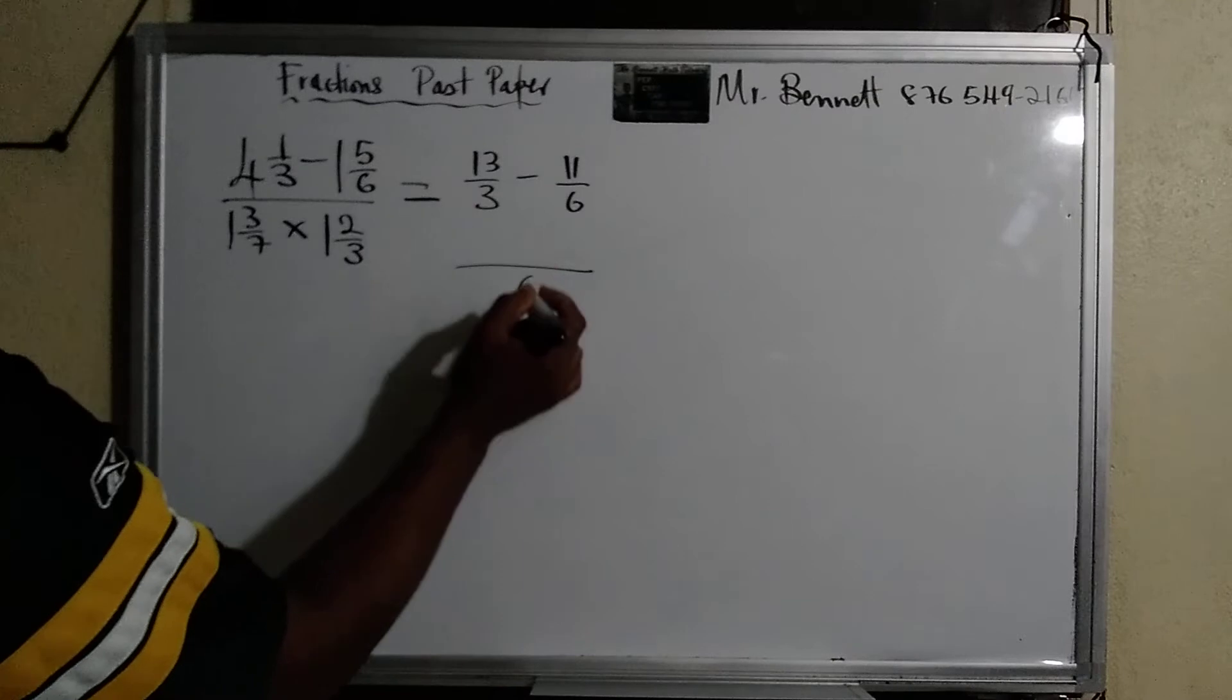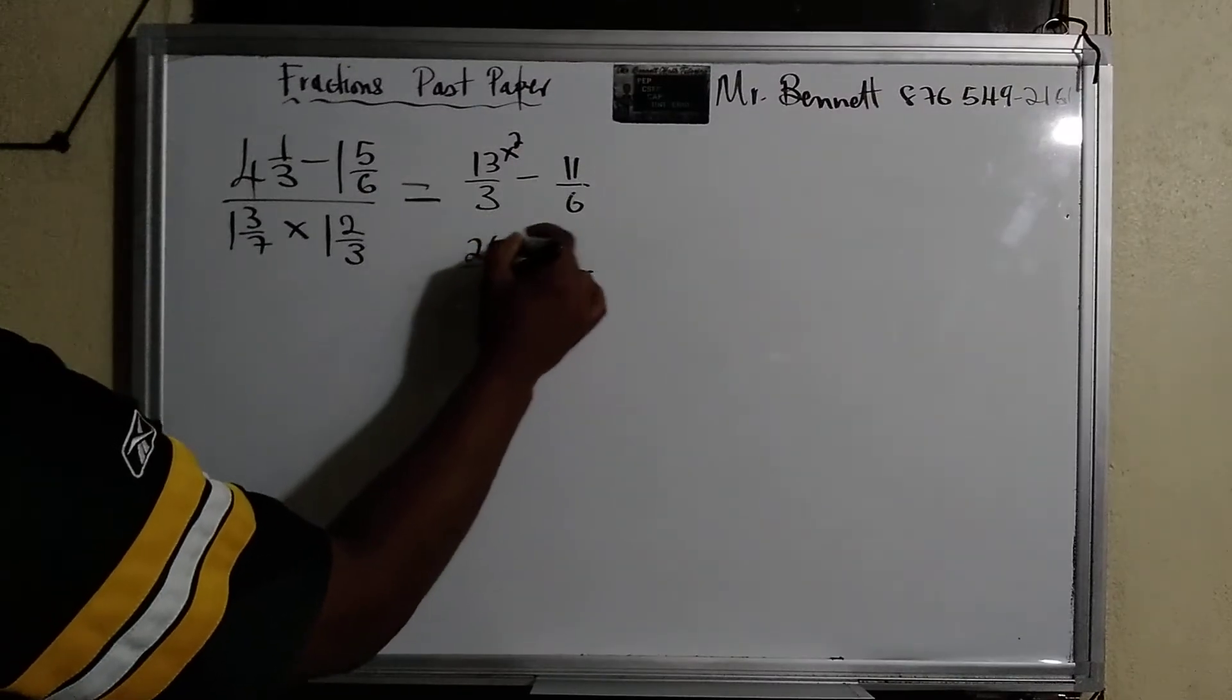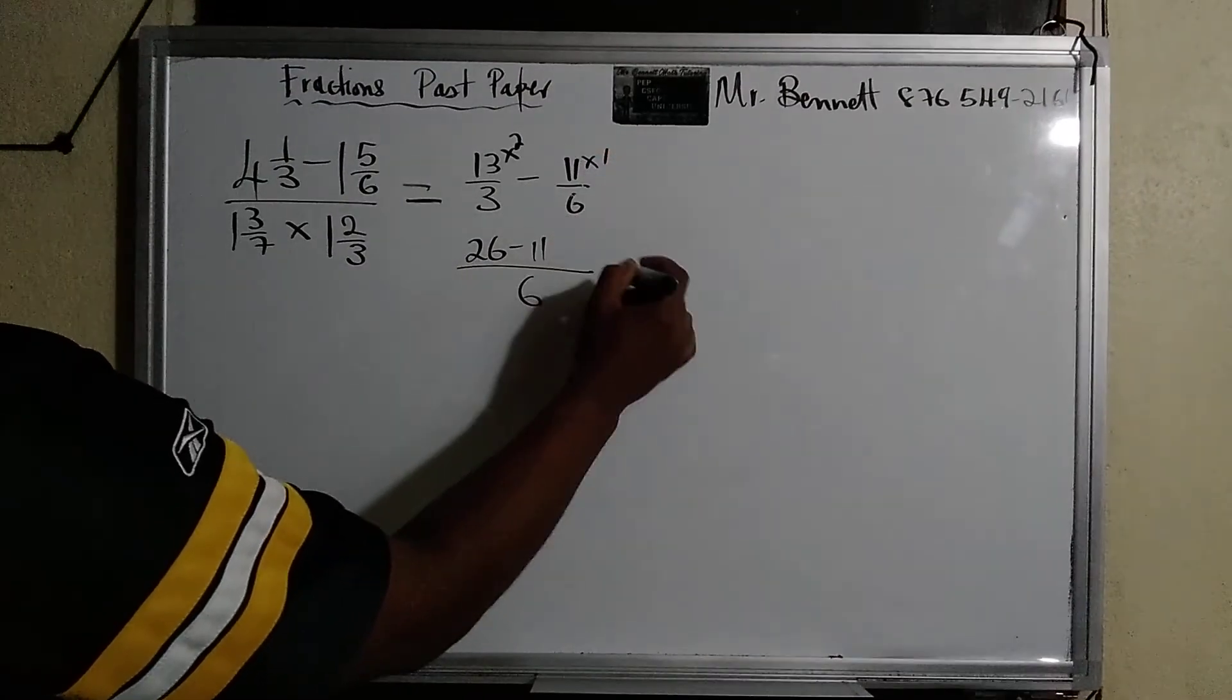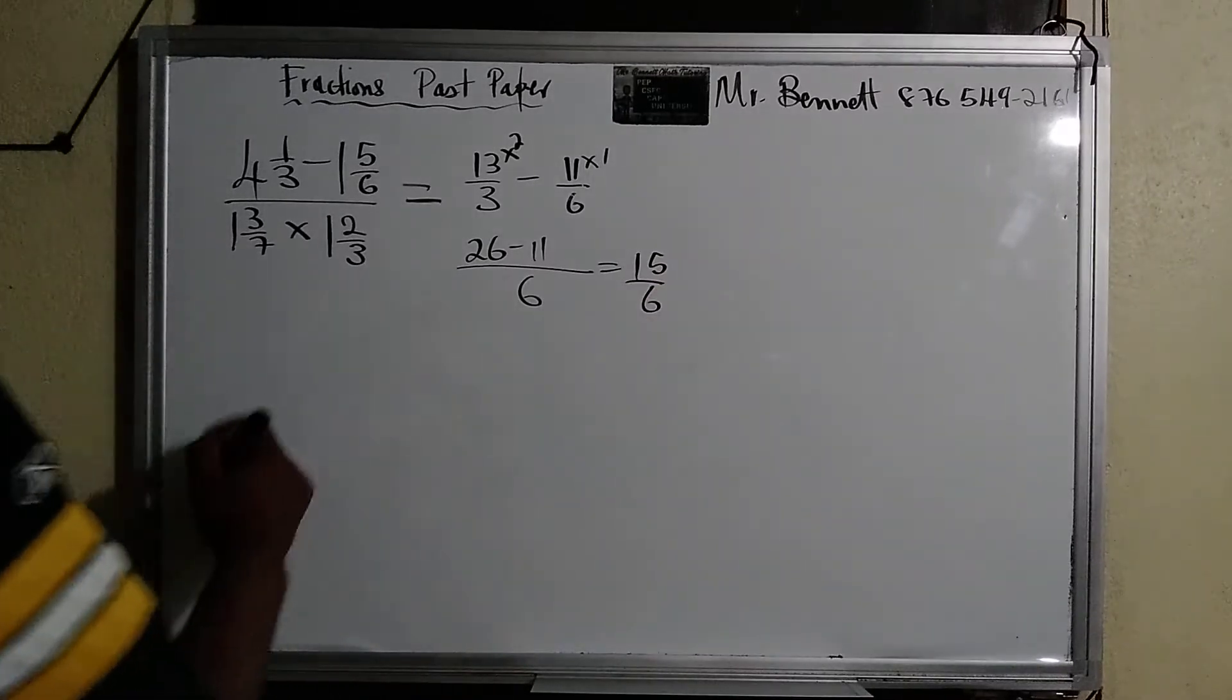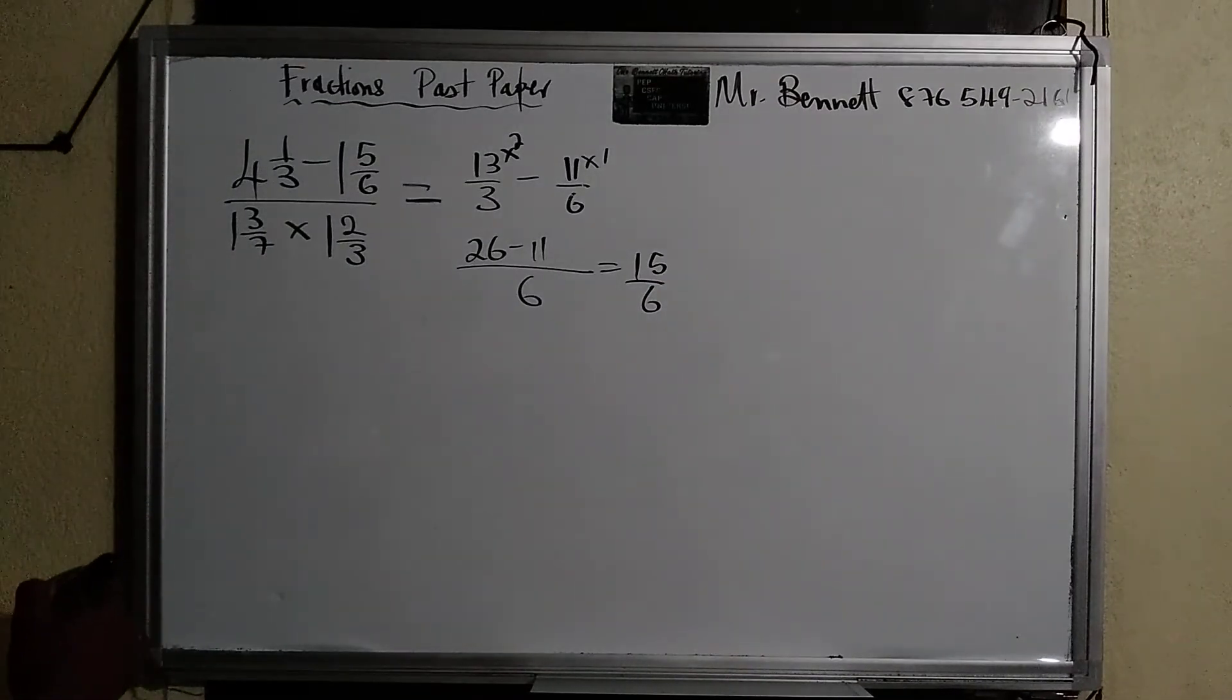Alright guys, let's continue. So you know that already, we must find the lowest common multiple once it's adding and subtracting. Three into six goes two times, that will be twenty-six, minus six into six, one times eleven. So that gives us fifteen over six.